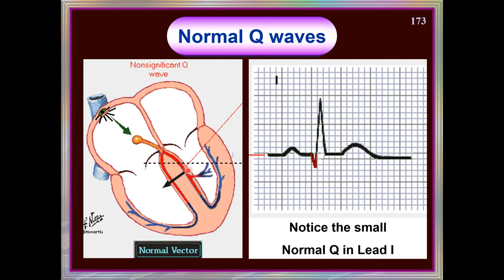The physiological Q wave occurs because the initial septal current goes away from the exploring lead L1 or V5/V6, registering a small initial negative deflection followed by a prominent R wave from ventricular contraction. The baseline ST segment and normal T waves confirm no ischemia, injury, or infarction. If there is ischemia you see T changes; if injury, ST changes — either elevation (transmural) or depression (subendocardial); if infarction, you see pathological Q waves.